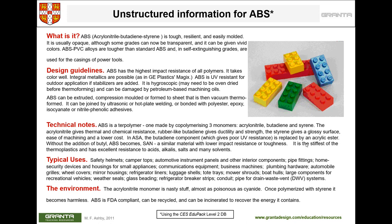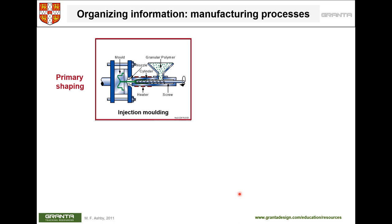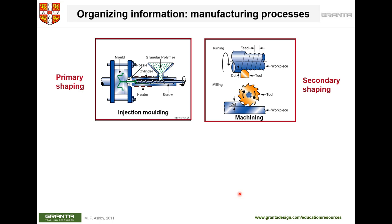In the CES software, for any material you look up, you can link to processes to see what manufacturing methods can be used — injection molding, compression molding, casting, additive manufacturing, and so on. This links process to material properties.